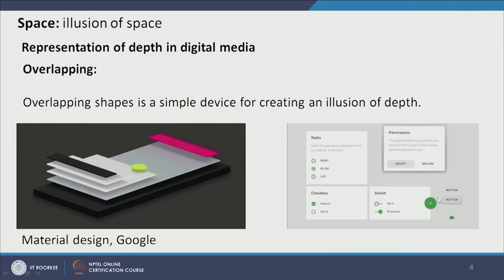Another way is overlapping. Overlapping shapes on top of other shapes can create an illusion of depth. The best example is Material Design by Google. Google's Material Design talks about an illusion of depth by overlapping. On the right-hand side we can see a red plus button appearing on top of a rectilinear shape, and this rectilinear shape has a drop shadow, so it appears overlapped on the background. Different tabs and buttons appear on top of each other — that is how Material Design creates an illusion of space through overlapping.